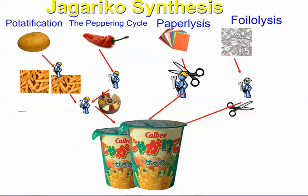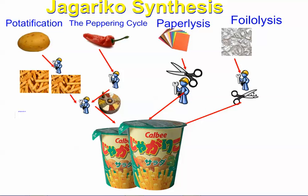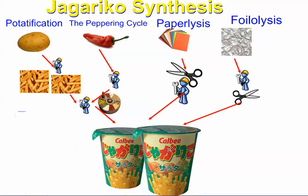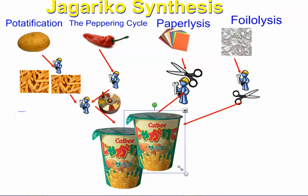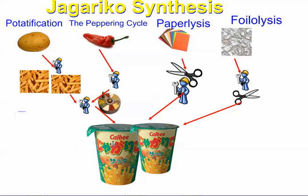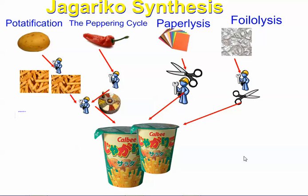In the process of making all this, you've got a lot of workers in the factory trying to make it all work. You've got the guy who shreds and chops the potatoes, someone to prepare all the peppers, someone to cut the paper, and someone handling the foil. If you think of these all as steps in the production of Jagariko, they're all important. How quickly they all work determines how quickly we can pump out these finished products.